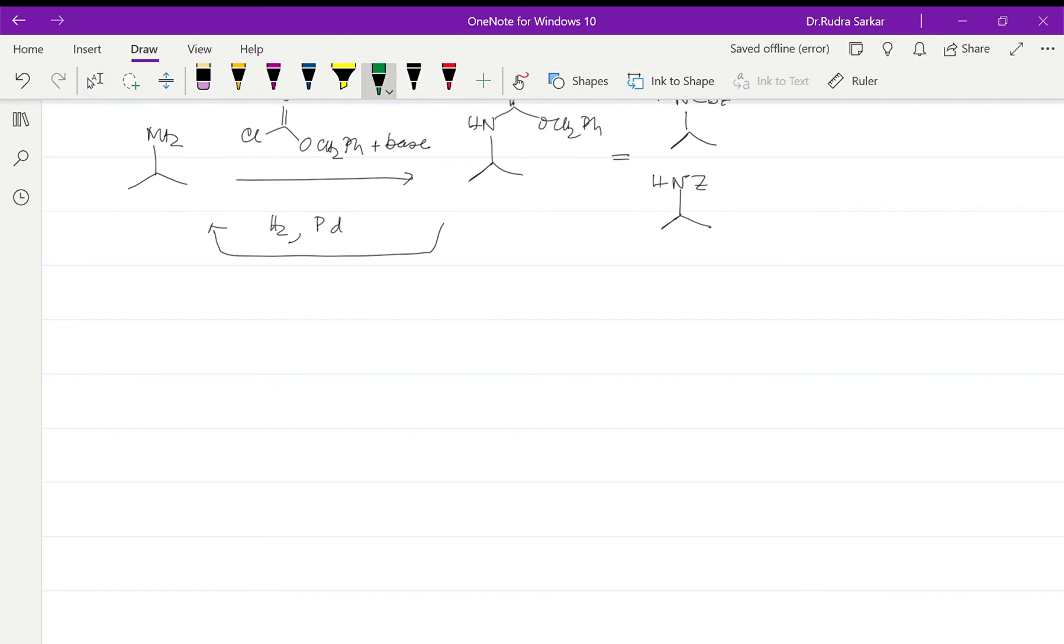One unique example: suppose there is aniline. If you treat this with Br2 in presence of acetic acid, then all the active positions—that is 2, 4, 6—will get attached to Br, and electrophilic substitution reaction is taking place.